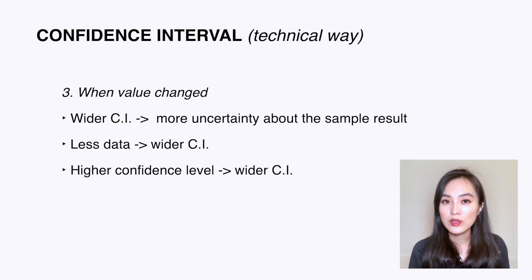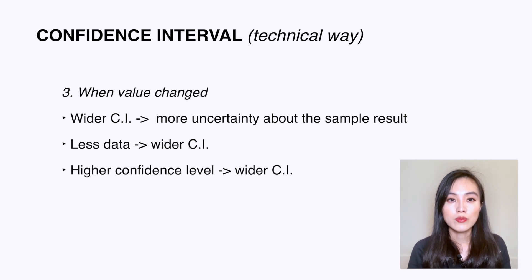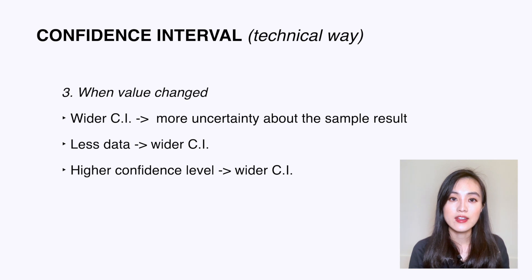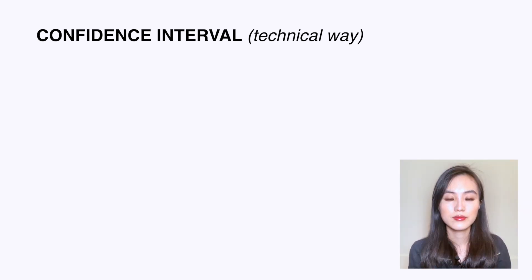The wider the interval, the more uncertain we are about the sample result. So the more confidence we want and the less data we have, the wider we make the confidence interval to be sufficiently confident of capturing the true value. In short: the higher the level of confidence, the wider the interval; and the smaller the sample, the wider the interval.